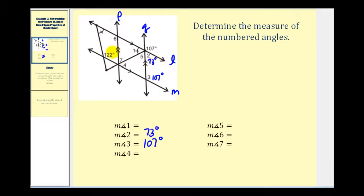The other angle given measures 122 degrees. Looking at this angle and the angle with one hash mark, these are consecutive interior angles, or same-side interior angles, with line L and line M cut by this transversal. So these two angles are supplementary, which means this angle would have to be 58 degrees.